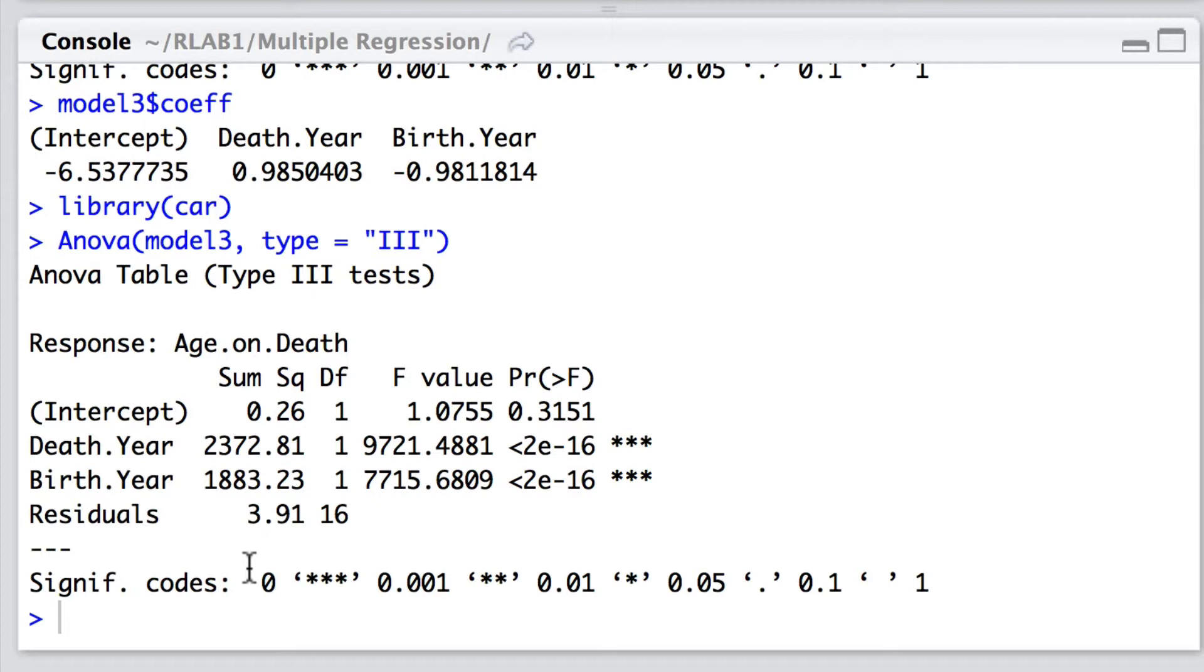And here you'll see quite clearly that both death year and birth year have a very highly significant effect on that response age of death once you control for the effect of the other variable.